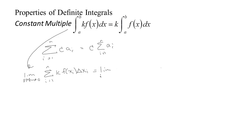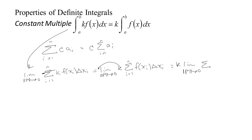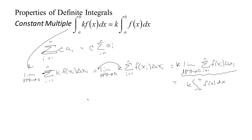But this is a sum, so you can pull the constant through: you have k times the sum from i equals 1 to n of f(x_i) delta x_i. Since k isn't changing, it comes through the limit, giving k times the limit as the norm of the partition tends to zero of the sum, which by definition is the integral from a to b of f(x) dx with k out in front. So because sums have this property, integrals — being limits of sums — also have it: you can pull the constant through.